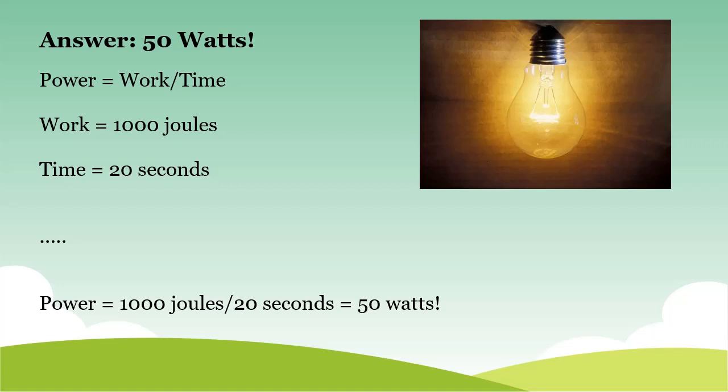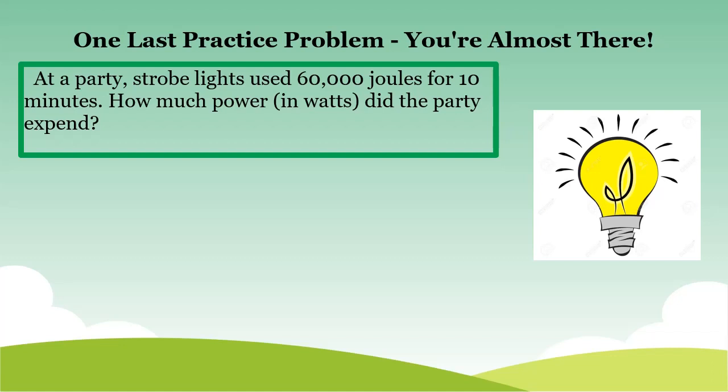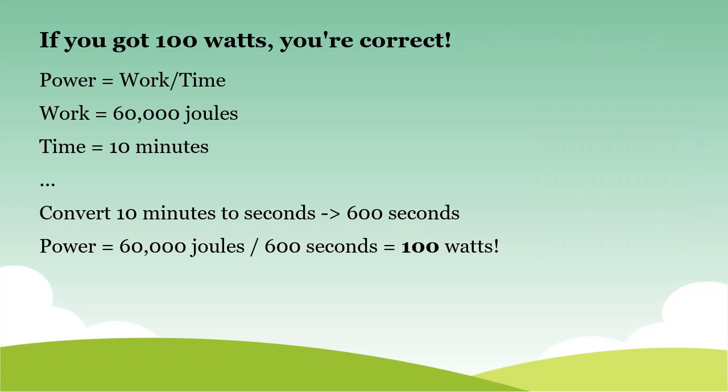One last practice problem — you're almost there. At a party, strobe lights use 70 joules for 10 minutes. How much power in watts did the party expend? Pause the video and try to work it out. If you got 100 watts, you're correct. Power is equal to work over time. Our work is 60,000 joules and our time is 10 minutes. Convert that 10 minutes to seconds and you get 600 seconds. 60,000 joules divided by 600 seconds equals 100 watts.